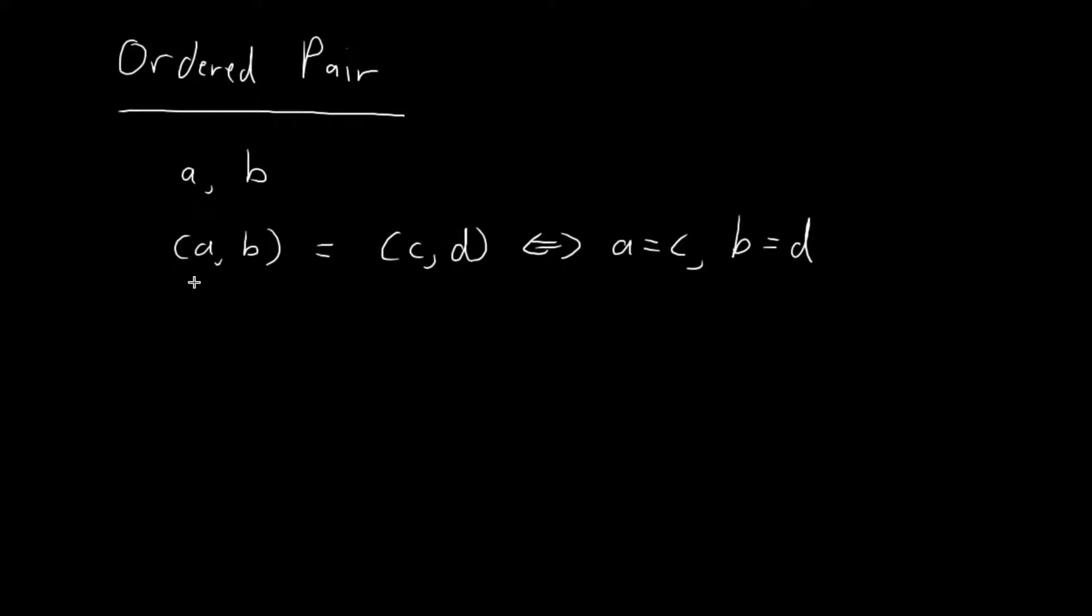you can see that the ordering of elements matters for ordered pairs. So (A,B) and (B,A) are actually two separate different entities, and they're only the same if and only if A is equal to B.